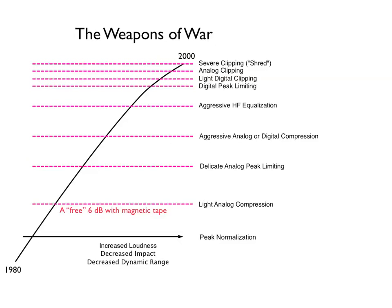So if we set the peak to full scale we'd get a free 6 dB compression without any work at all. We then started to apply some light analog compression with our digital sources because we just couldn't compete with analog magnetic tape without further compression. The car CD player was the first accelerant for the loudness race, because of the practice of peak normalization. Engineers trying to reduce dynamic range for car listening began to use more analog compression, then adjusted the peak level to full scale again, so the average level kept on moving up.